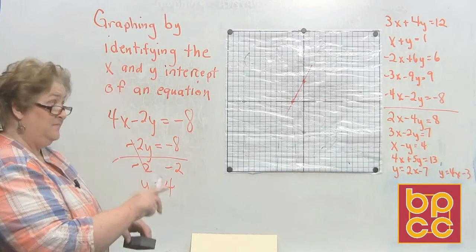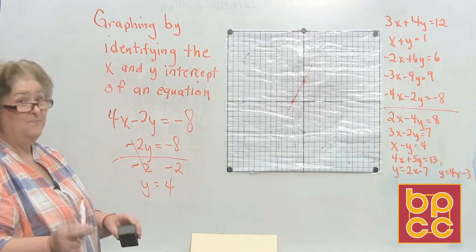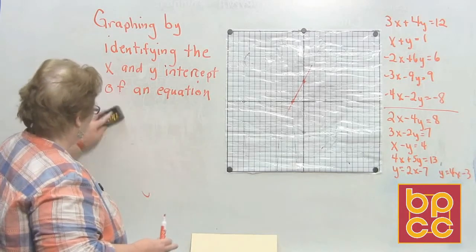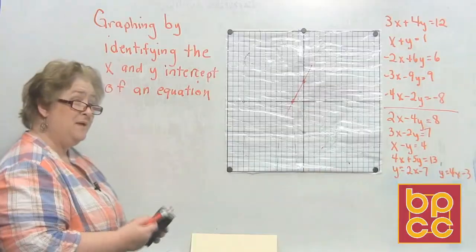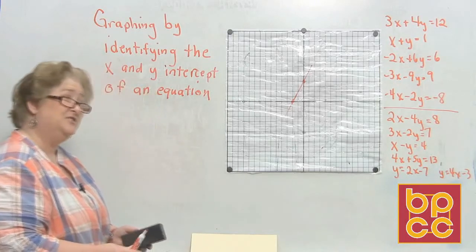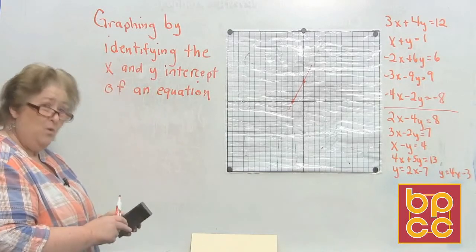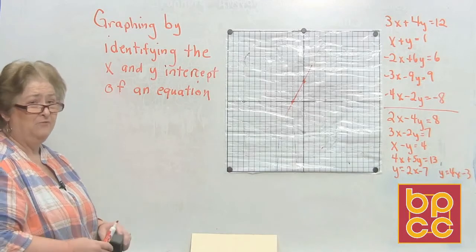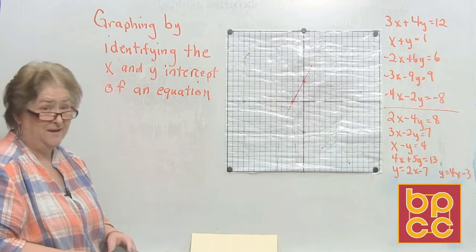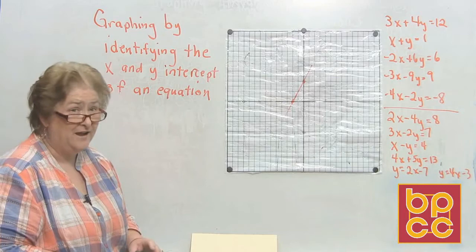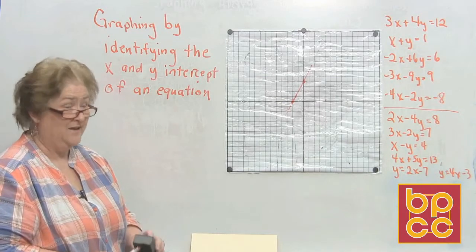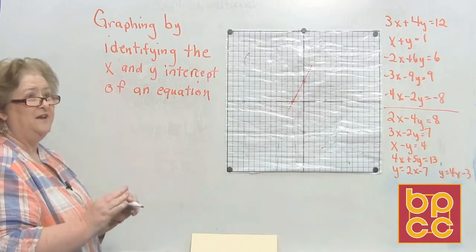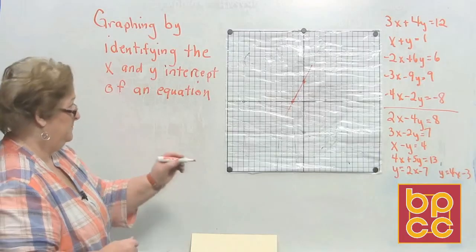For the next set, some equations may work for graphing and some may not. So rather than graphing, I just want to find where these equations would cross the x and y-axes. Even if we can't graph it precisely, we can still determine where the line would land on each axis. We're not going to graph — we're just going to find where it would cross.